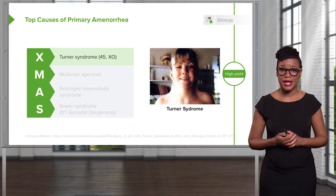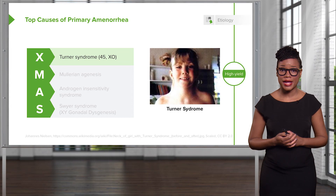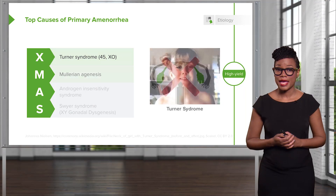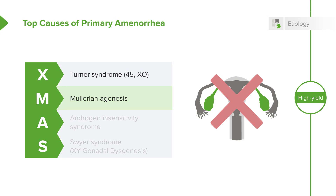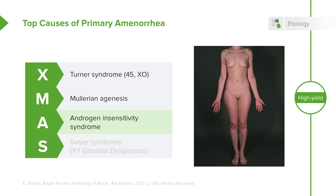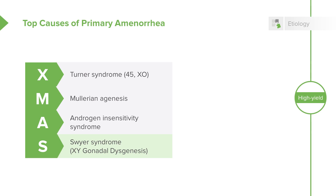Here is a quick mnemonic to remember the causes of primary amenorrhea: remember XMAS. X is for 45XO, or monosomy, associated with Turner syndrome. M is for Mullerian agenesis — recall there is another lecture you can review. A is for androgen insensitivity syndrome, typically complete androgen insensitivity syndrome, covered in another lecture. Lastly, S is for Swyer syndrome, also referred to as XY gonadal dysgenesis.